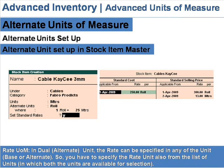Rate in dual units: the rate can be specified in either unit — base or alternate. You need to specify the rate unit as well, selecting from the list of units in which both units are available for selection.